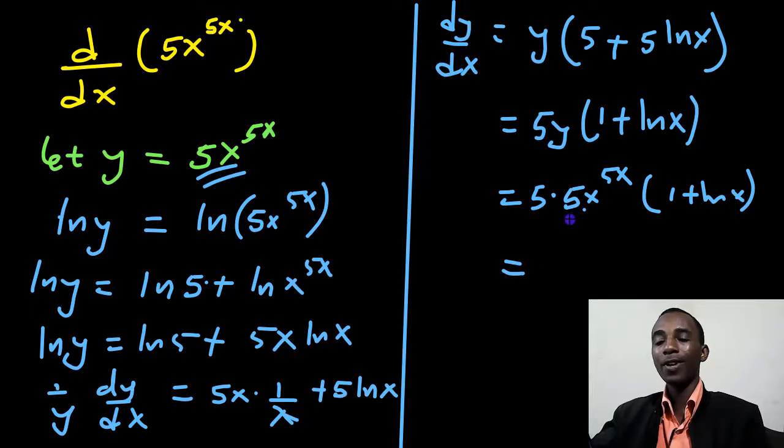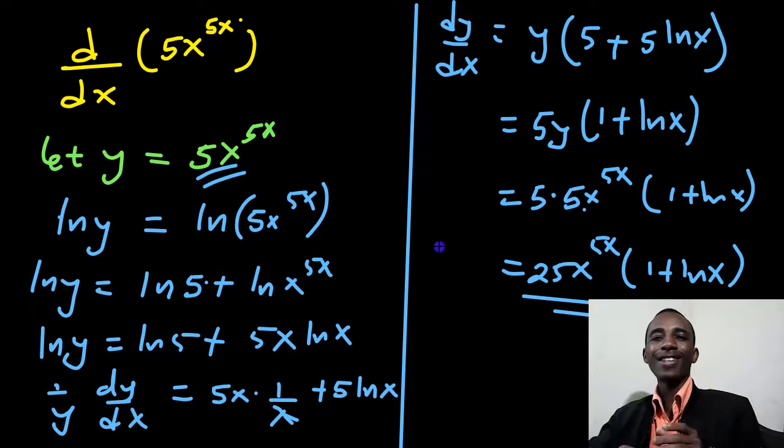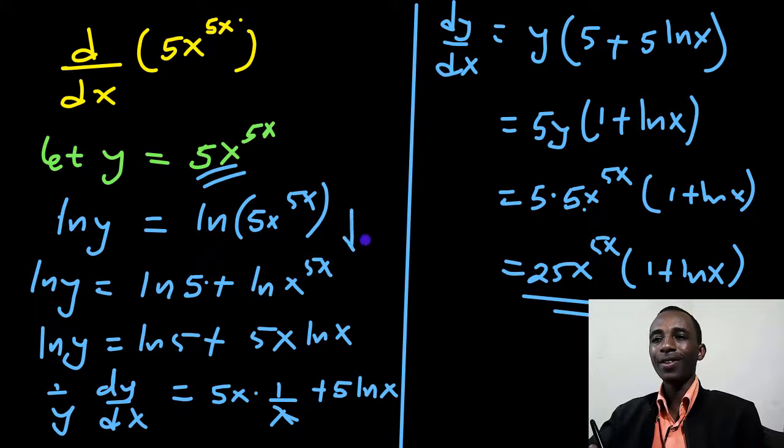So finally, 5 times 5, that's 25x to the power of 5x, 1 plus the natural log of x. So it's an interesting problem, especially on the very first few steps.